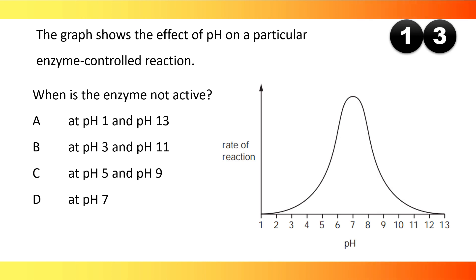The graph shows the effect of pH on a particular enzyme-controlled reaction. When is the enzyme not active? At pH 1 and pH 13. The answer is A.